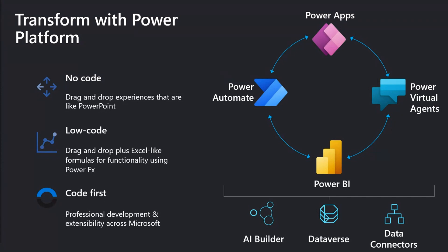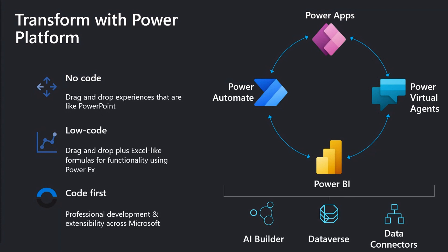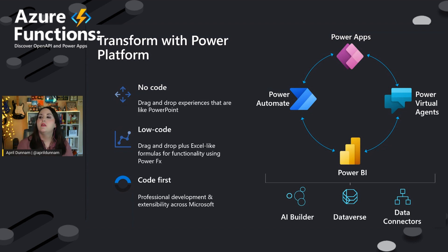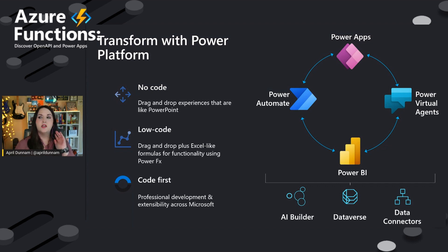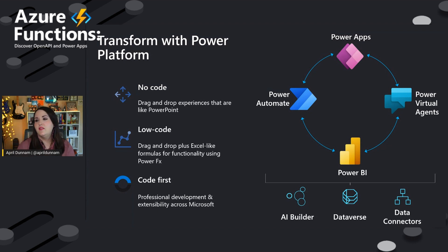We have Power BI, which probably a lot of us have heard of — commonly used in enterprise orgs, the oldest tool of the Power Platform, for creating dashboards and reporting. We have Power Automate, which is almost like the glue — our workflow automation tool for the Power Platform. It can be used across all of the tools, across SharePoint, Dynamics, and Azure to automate almost anything. New technology also allows us to do robotic process automation with Power Automate Desktop, which is now included in Windows.